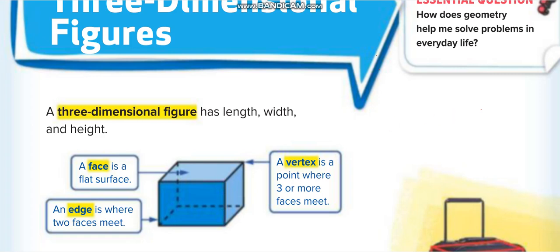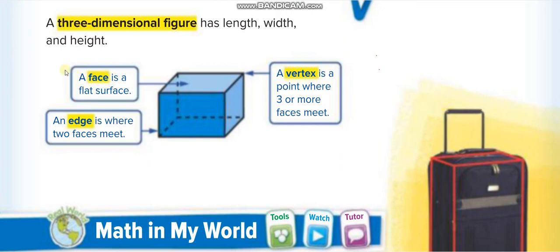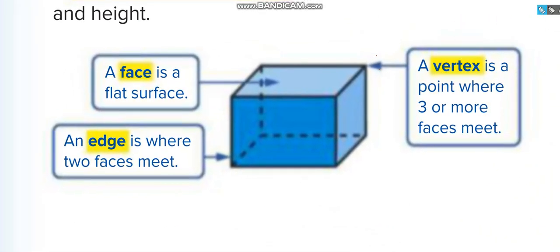In every three-dimensional figure, we have three things. A face — a face is a flat surface. You can see how many flat surfaces this box has: the top one and the bottom one, the two sides, and front and back. So total, how many faces does this box have? Six. Now, an edge is where two faces meet. This box has six faces, so where two faces are meeting, you can see two faces are meeting here.